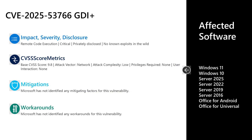The first vulnerability I'll talk to in this video is CVE-2025-53766. This is a critical remote code execution vulnerability, privately disclosed with no known exploits out in the wild. This has a base CVSS score of 9.8 on that scale of 10, certainly elevated and hitting the high watermark this month. The attack vector is over the network, the attack complexity is low, no privileges are required, and no user interaction is required to leverage this. There are no documented mitigations or workarounds. As far as the affected software, it's Windows 10 and 11 on the desktop side, as well as Server 2016 up through Server 2025 on the server side, and also Office for Android and Office for Universal.